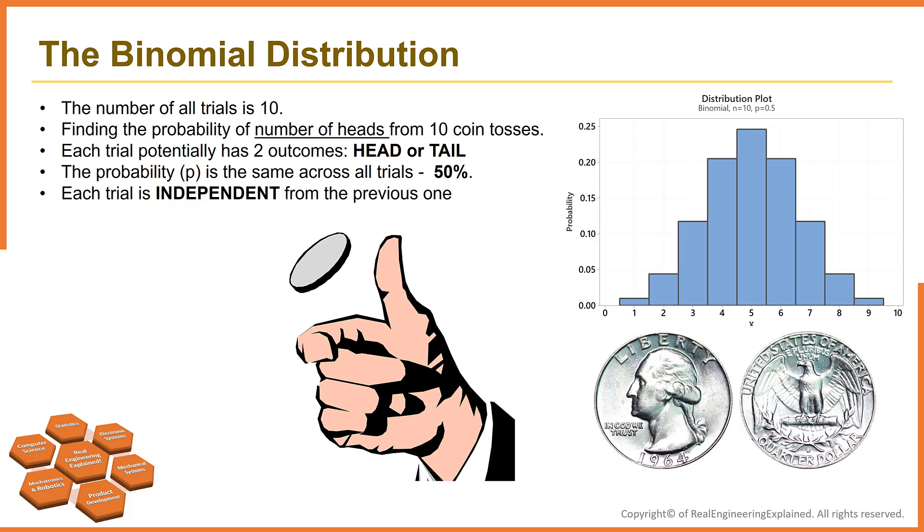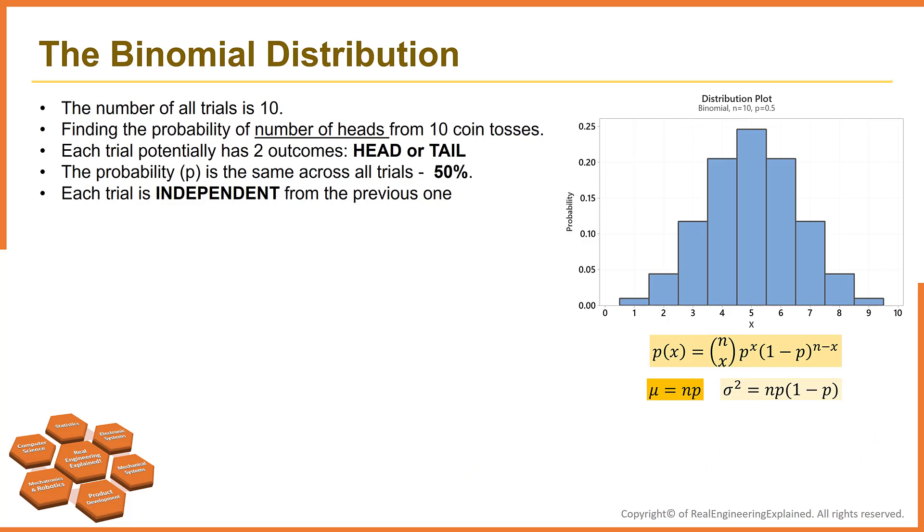Each trial is independent from the previous one. The current toss might be head, which is independent from the previous toss. As we said, the number of all trials is 10, so n is equal to 10. The tossing at the first time doesn't have any effect on tossing in the second time.